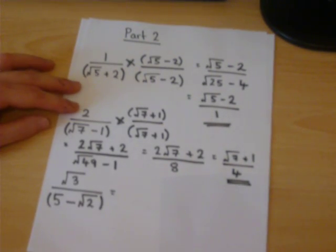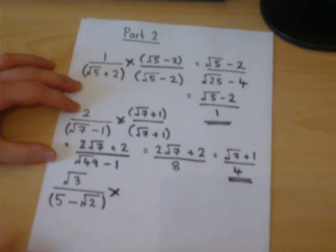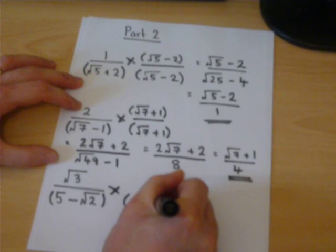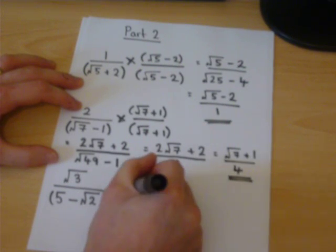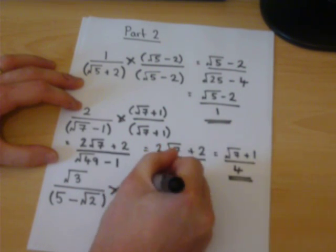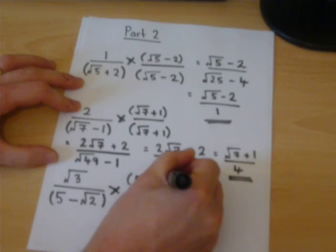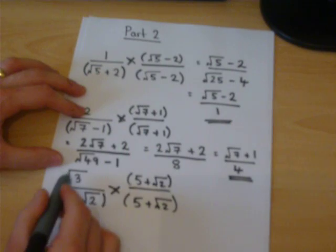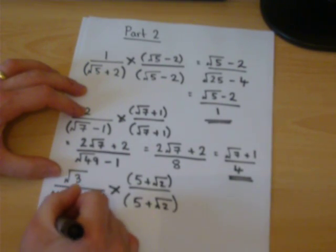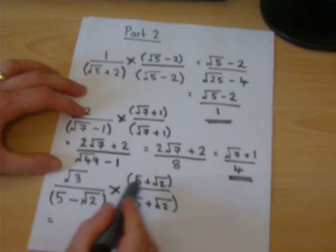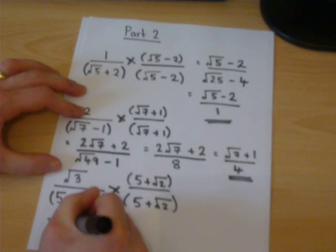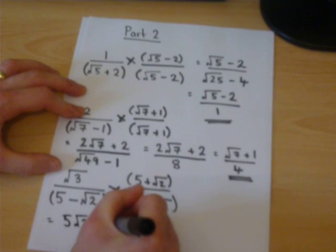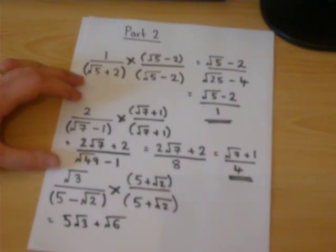And the final one. We're getting a pattern now. We times by the same expression with the sign changed. We work out the top part separately. Be very careful. Root 3 times 5 is 5 root 3. Root 3 times root 2 is root 6.